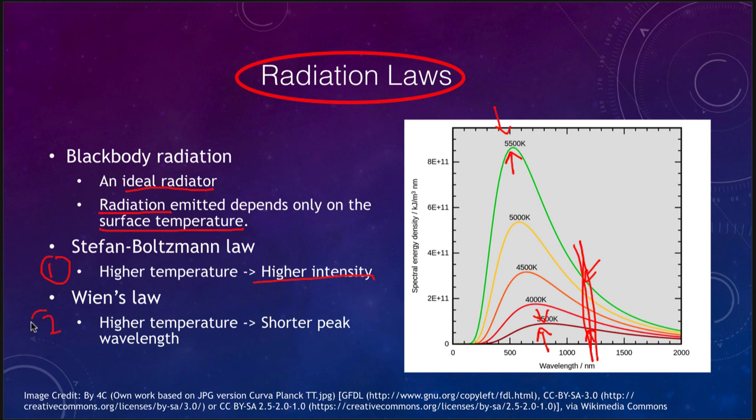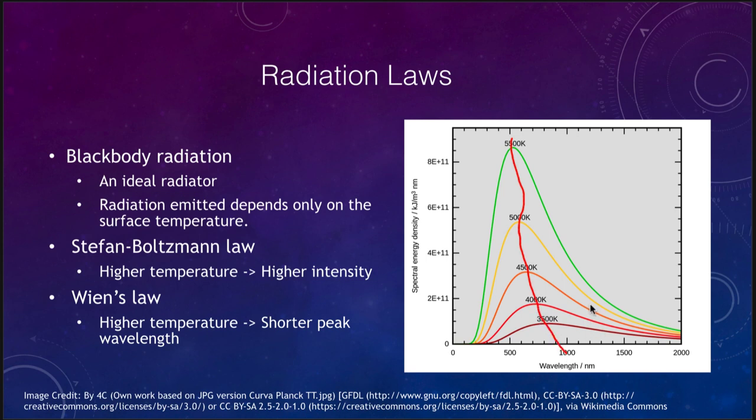Now the second radiation law is Wien's law. Wien's law tells us that the higher the temperature, the shorter the peak wavelength. So that's the shift that we're seeing here. Let's clear this up a second. So the shift that we're seeing here is that if you notice the peak is going from here to here to here to here, and it is shifting towards the right hand side. So the higher the temperature, the shorter the wavelength, and the cooler the object, the different color it's going to look. So this very cool object is going to look red in color because most of its light is being emitted in the red and the infrared. A very hot object would look bluer in color because most of its light would be emitted in the blue. So the peak wavelength does change with temperature as well.